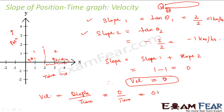With this we conclude our discussion on speed and velocity. Speed and velocity tell us about the rate of change of position of an object. Speed is the total distance covered in a specific time — it is a scalar quantity. Velocity is the rate of change of position with time, given by displacement per unit time — it is a vector quantity. Graphically, the slope of a distance-time graph gives speed, and the slope of a position-time graph gives velocity.